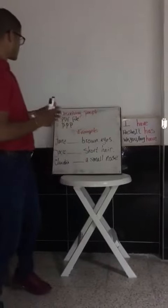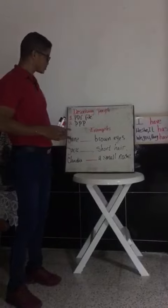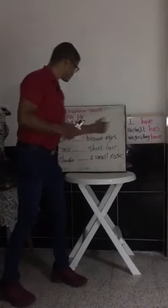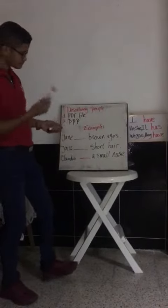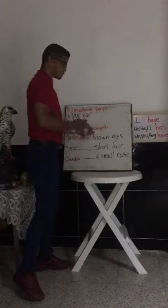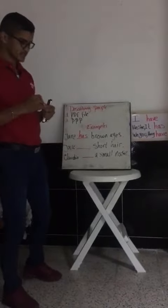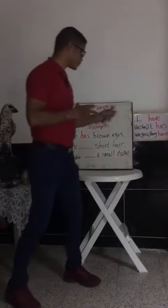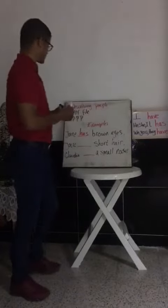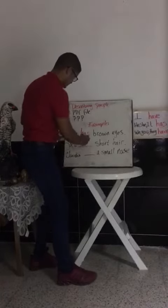So here I have some examples. The first one is Jane. Remember that Jane is 'she' in this case, so we have to use 'has.' Jane has brown eyes. The second example is Jack. Jack is a man, so we use 'he,' and as you can see here, we have to use 'has' again.